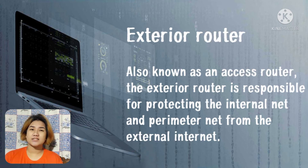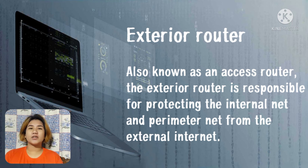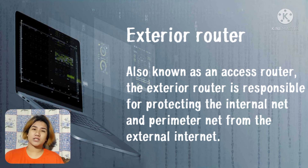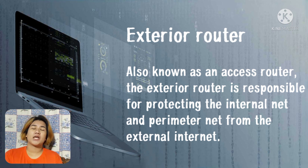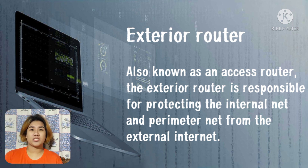Lastly is the exterior router, also known as the access router. The exterior router is responsible for protecting the internal network and perimeter network from the external network. These routers do little packet filtering and allow almost everything outbound from the perimeter network. The packet filtering rules to protect internal machines are usually the same on both the interior and exterior routers.